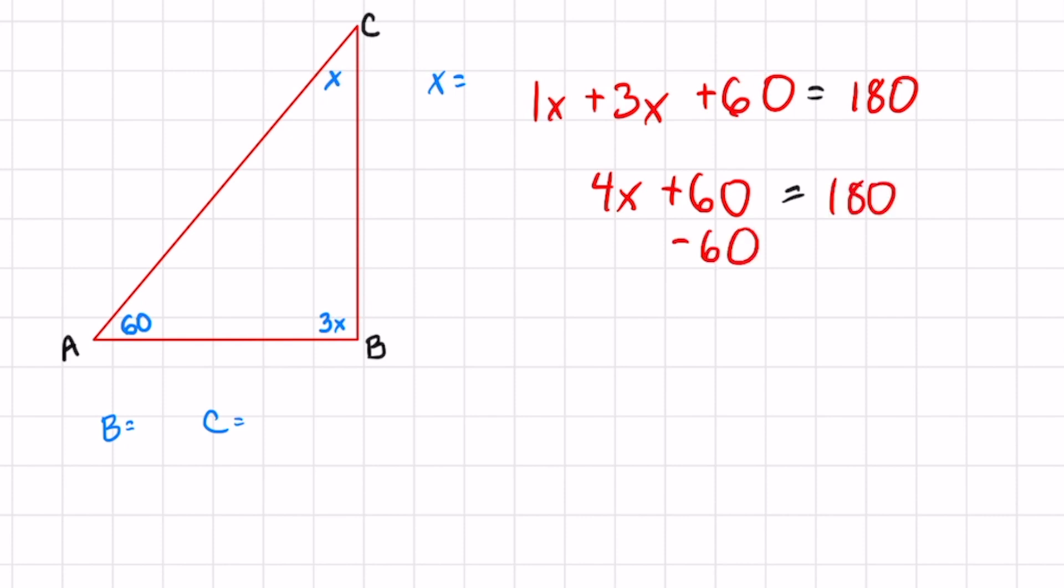Two-step equation. Get rid of the 60 first. Now I got 4x equaling 180 minus 60, which is 120. Divide both sides by 4 and you got x. You got part of the problem, but you're not done yet. Now we know what x is: x is 30. If I want to find out angle B, all I gotta do is plug it in. So B is gonna be 3 times 30, so B is gonna equal 90. C is just x, and x is 30.